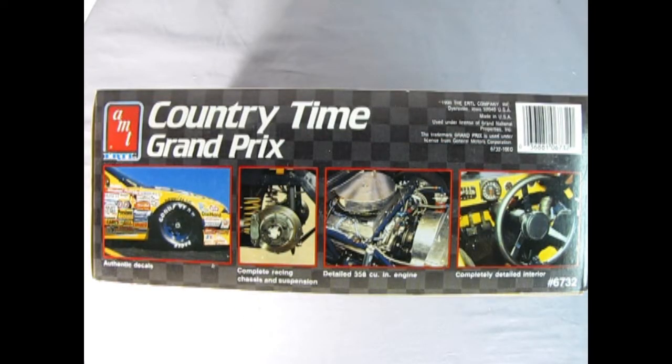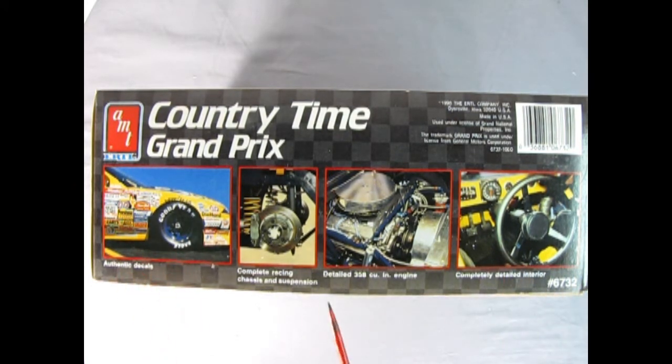On this side of the box we get some photographs of the real car to use for reference which is always nice. We've got these authentic decals, the complete racing chassis and suspension here, our detailed 350 cubic inch engine, and then we've got our completely detailed interior.